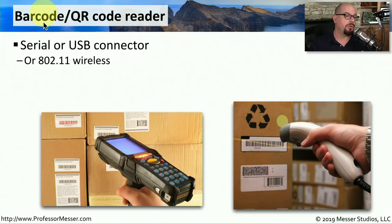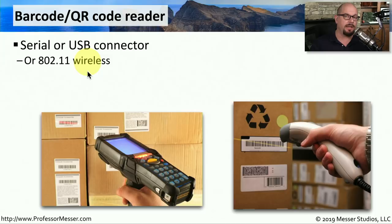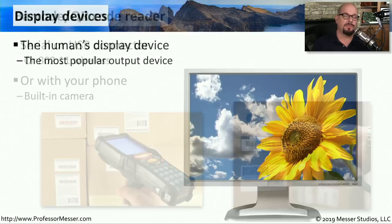If you work in a warehouse or use a point of sale terminal, you're probably also using a barcode reader or a QR code reader. These are usually connected to your computer with serial connections or USB connections. With mobile devices, these may be 802.11 wireless devices. This functionality has even come down to our mobile phones, where you can read barcodes and QR codes with the camera on your mobile device.